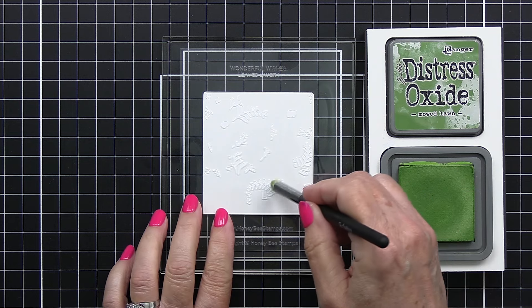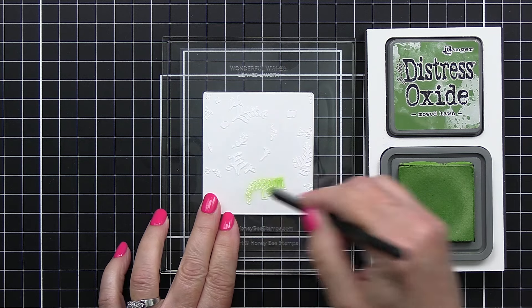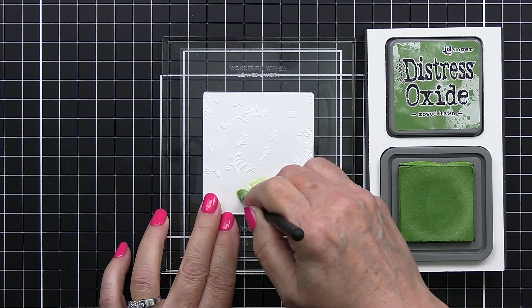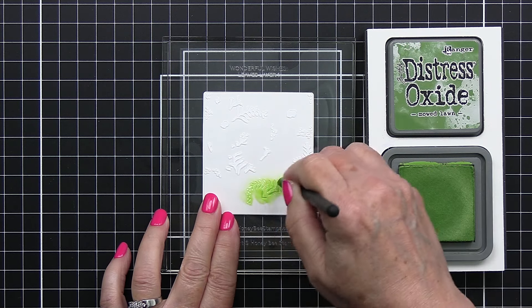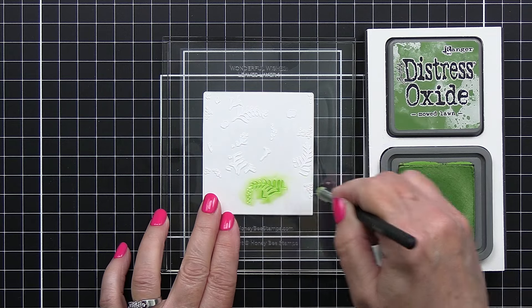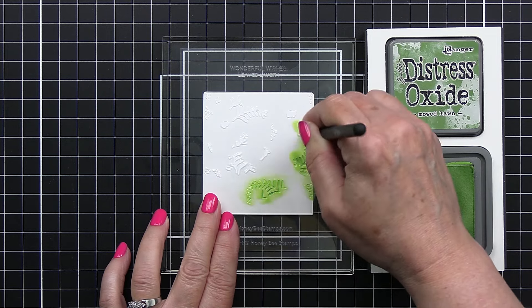I am using a Picket Fence Studio grip mat on my black grid mat here to hold my paper down as I'm stenciling with my Honey Bee detail brushes, and I believe I'm using Mowed Lawn Oxide Ink for this first layer of stencils.